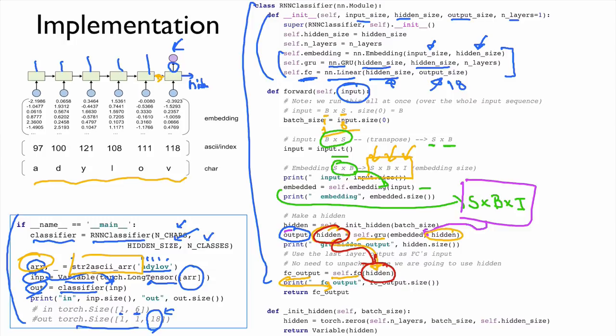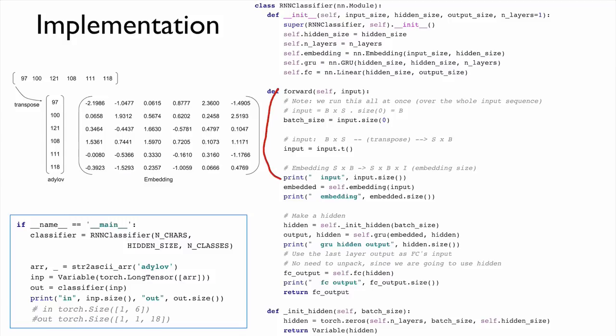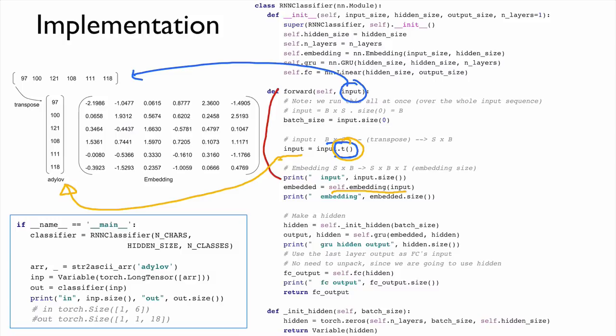To summarize the transposing step: the given input starts as batch-by-sequence. After transposing, it becomes sequence-by-batch. We then do the embedding lookup, and the embedded result — sequence by batch by embedding size — is used as input to the RNN.